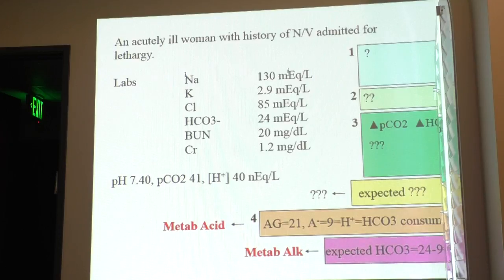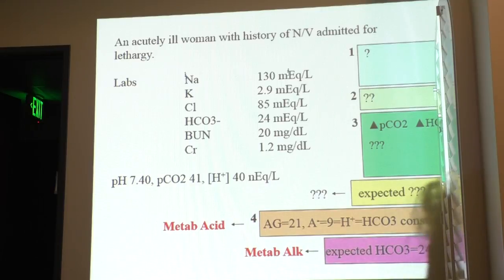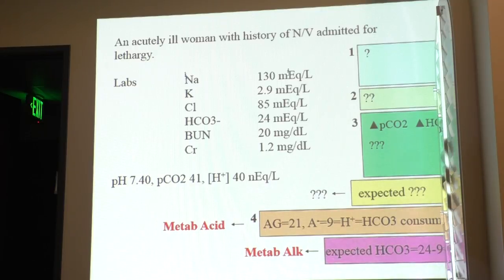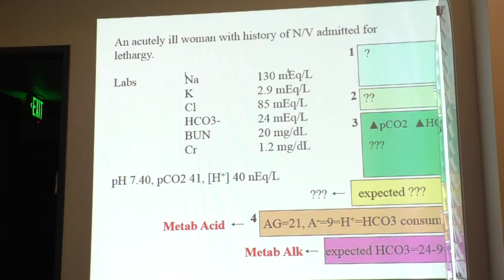A lot of the labs, especially in teaching programs, they report the anion gap and they red flag it. Some community hospitals don't report it. They just give you whatever is there, and you'll be like, oh, whatever, this person is just fine. But this person can very well have sepsis, or could very well have DKA, unless you do your mud piles cheat sheet.